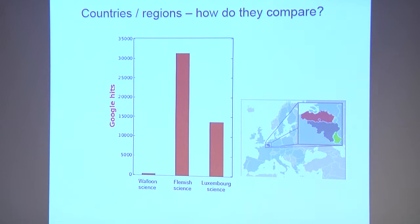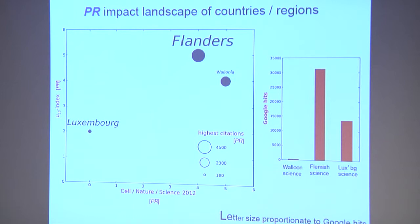You can also do countries. Belgium is divided into two sections, Wallonie and Flemish. If you do a simple Google search, everybody's heard of Flemish science, and Walloon science barely registers. But with the personalized and refined Uber index, you find they are pretty comparable to each other. In this case, Luxembourg is the outlier. So this is also defying expectation.